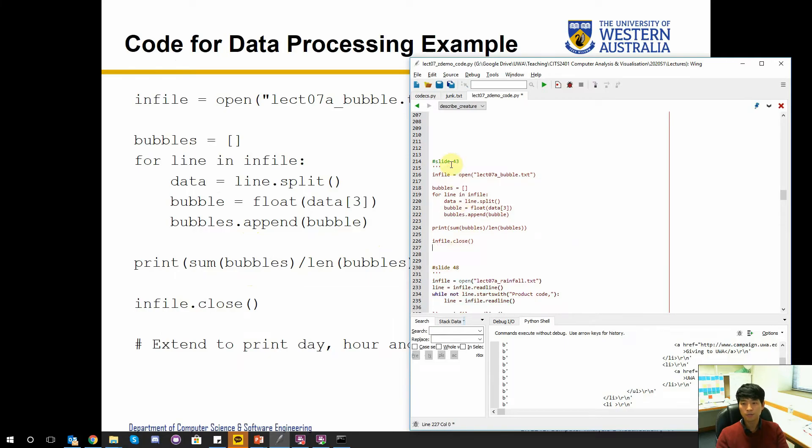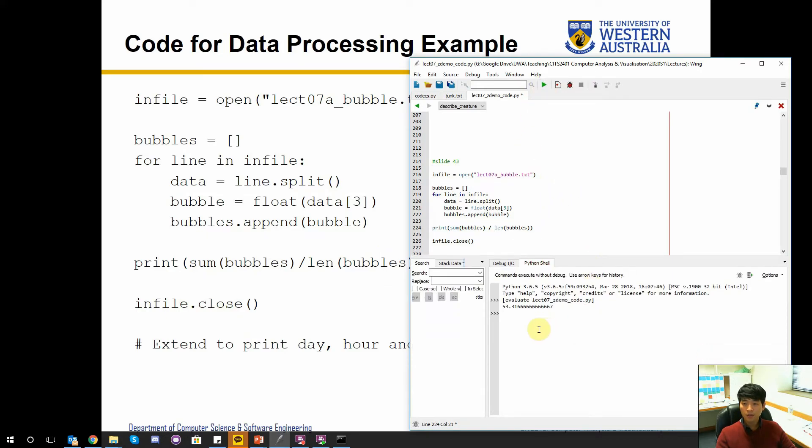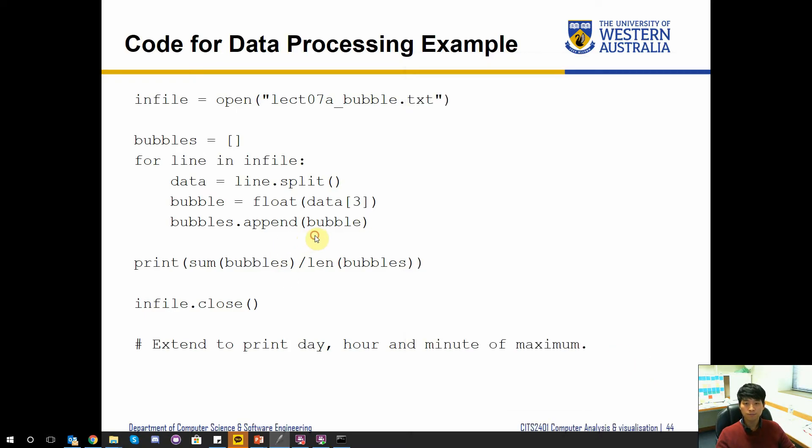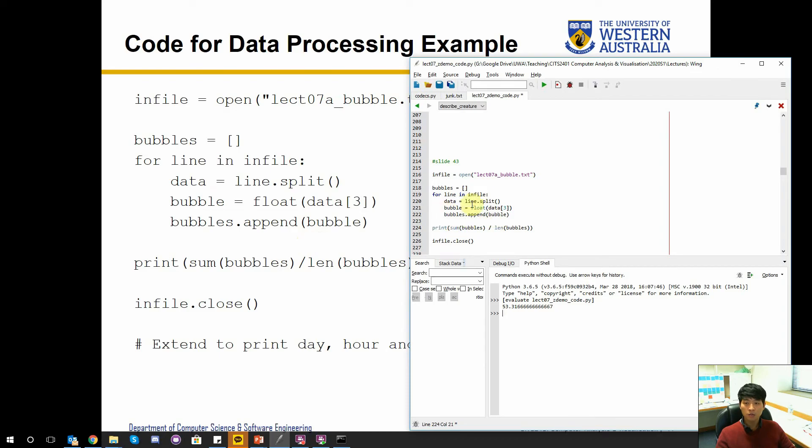Let's give that a go. That's the code, this one is exactly the same as here. If you're a pilot constraint, add a space there. Run it and you should get the same value as me using the same file. Basically, the average number of bubbles we observed for this particular recording is 53.316 recurring.